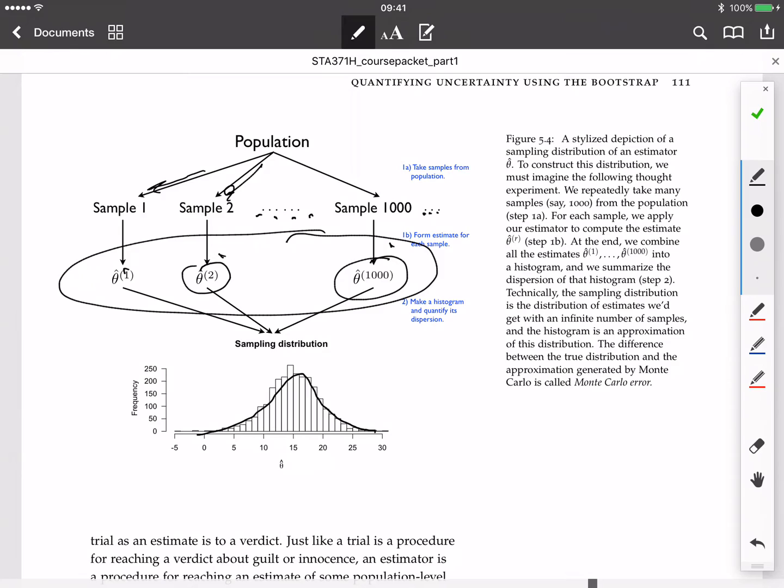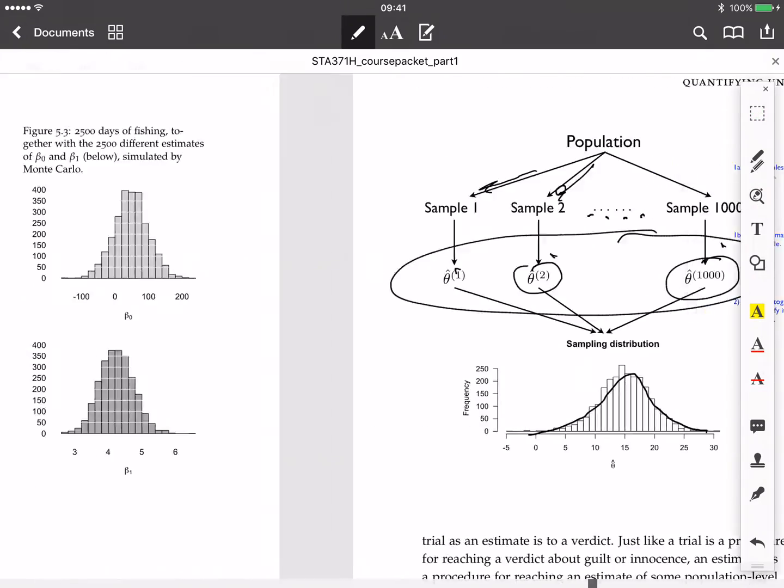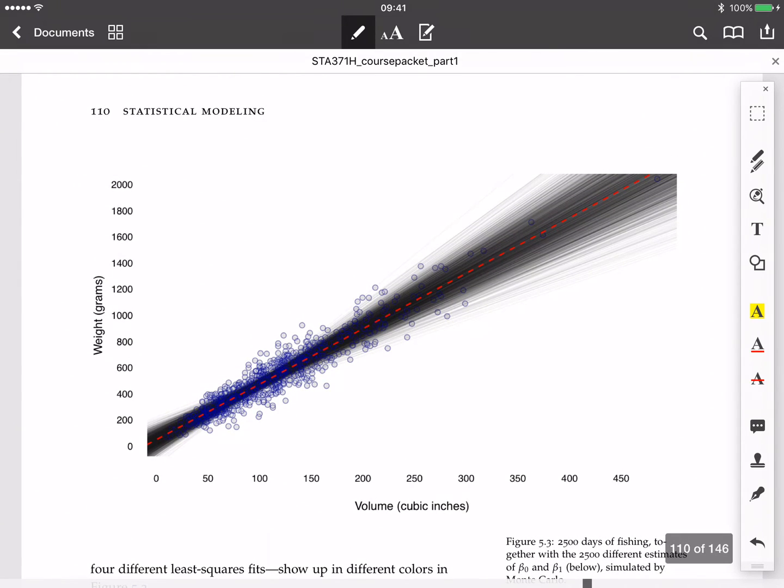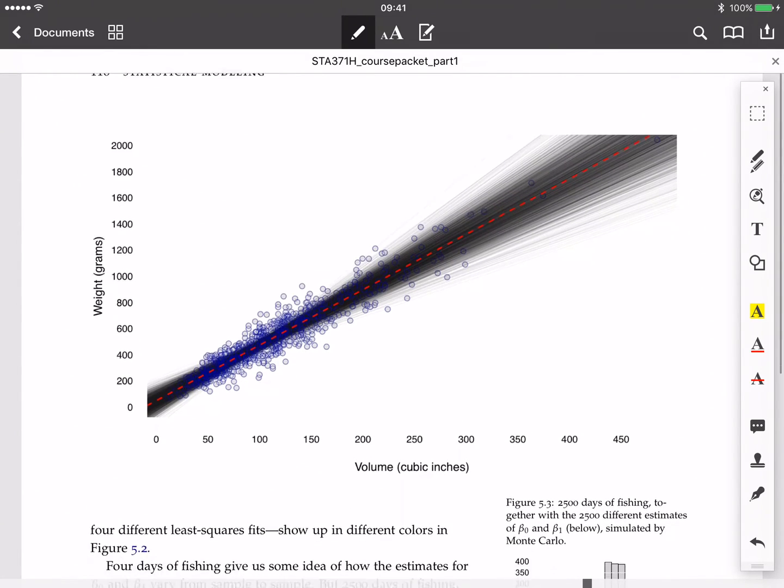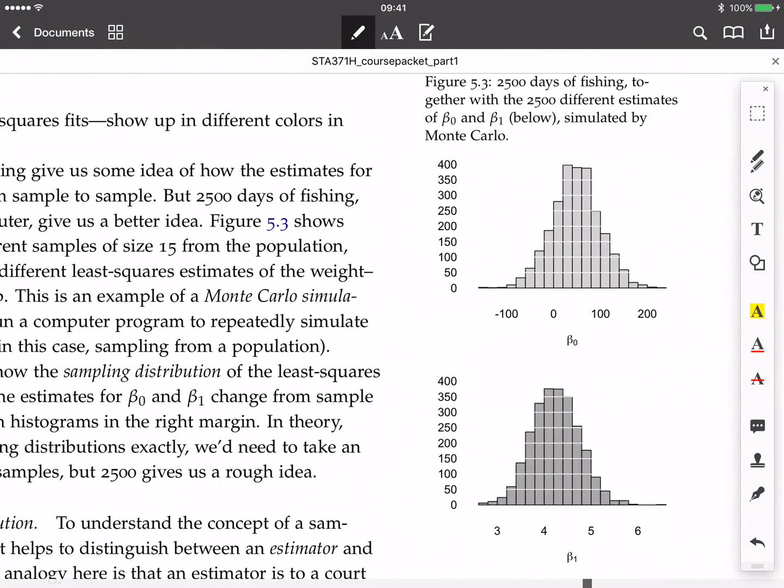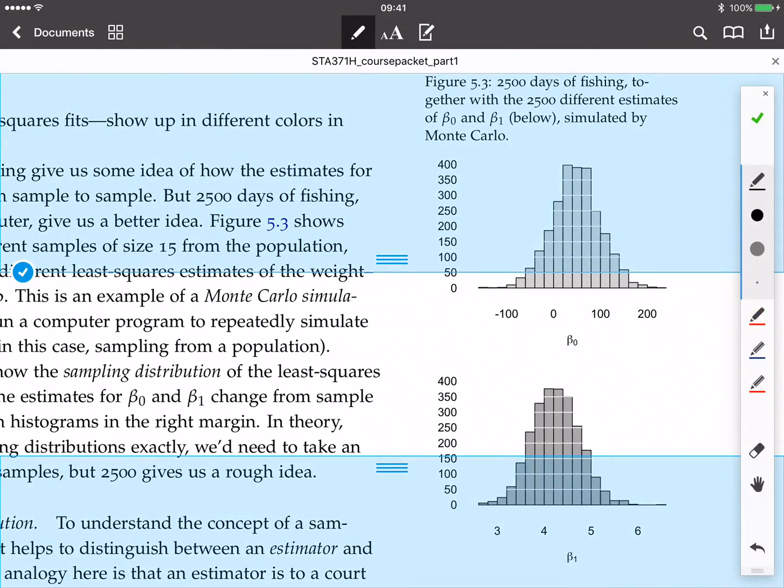What if I were repeatedly taking one sample after another and for each sample reconstructing my estimator on the basis of that sample alone? That histogram is now the sampling distribution. And if you want to be in the context of our fishing trip here, this was our simulated by computer, our 2,500 days of fishing.